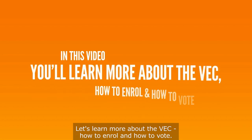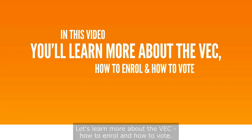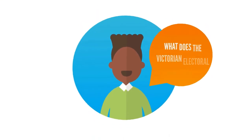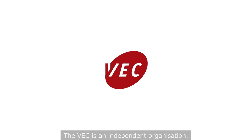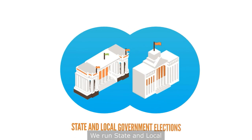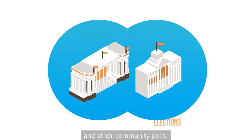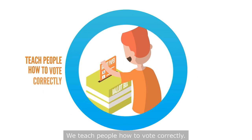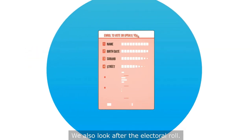Let's learn more about the VEC, how to enrol and how to vote. What does the Victorian Electoral Commission do? The VEC is an independent organisation. We are not a government department. We run state and local government elections and other community polls. We teach people how to vote correctly. We also look after the electoral roll.